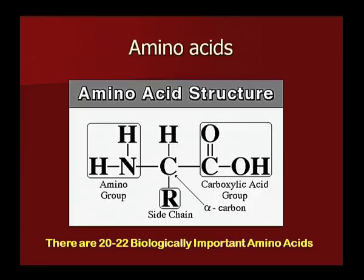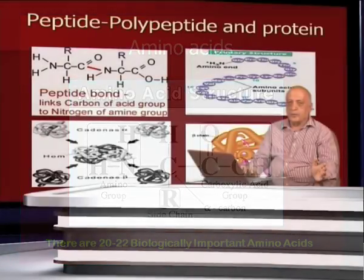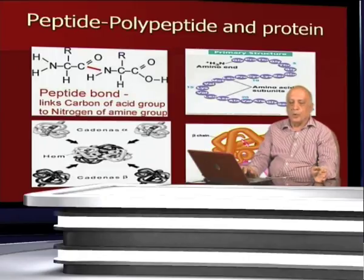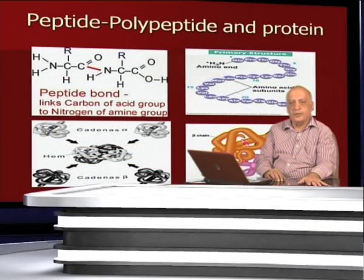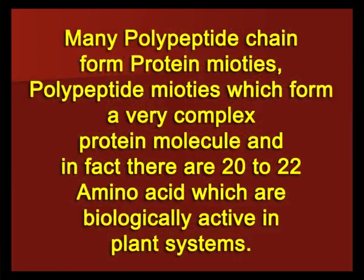Nitrogen is present in the amino group of amino acids. An amino acid is a combination of an amino group and a carboxyl acid group with the alpha carbon. These amino acids combine to form polypeptide chains. The peptide bond — seen as a CONH group — leads to dipeptide and polypeptide chains. Polypeptide is a combination of a large number of amino acids in a chain. Many polypeptide chains form protein moieties, and there are 20 to 22 amino acids which are biologically active in plant systems.